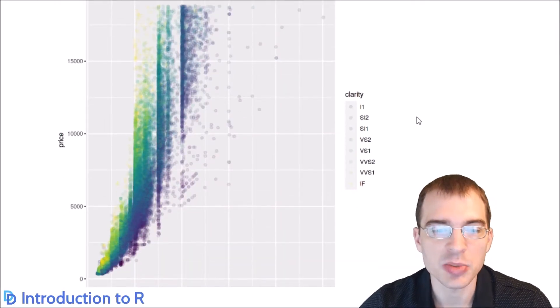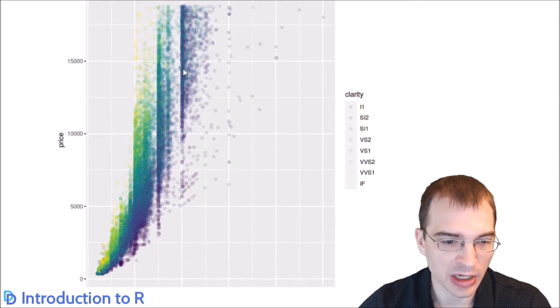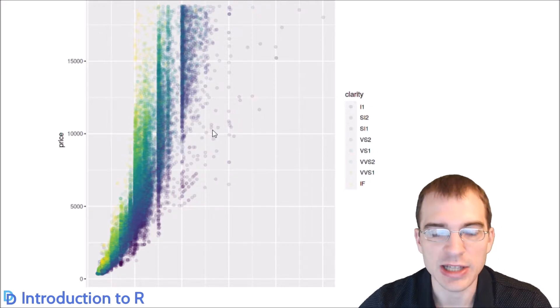As you can see, we can tell a little bit better in this plot where the actual density of the data is, and it seems there's actually bands of density at common carat weights, like carat weight of 2, 1.5, and 1. So it seems that diamonds are often cut to very specific weights.